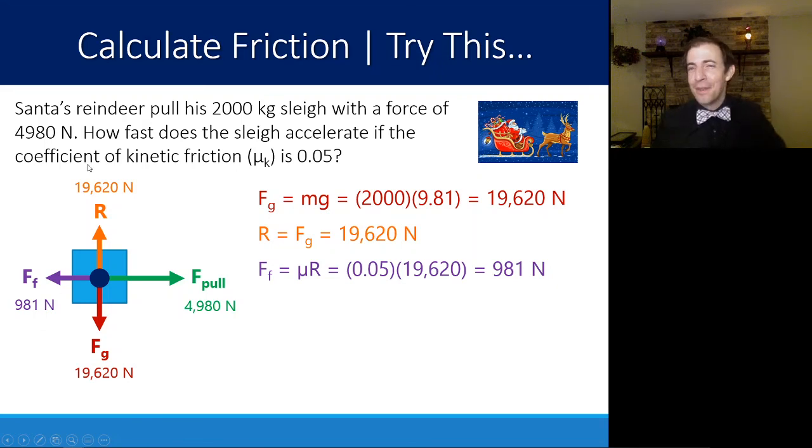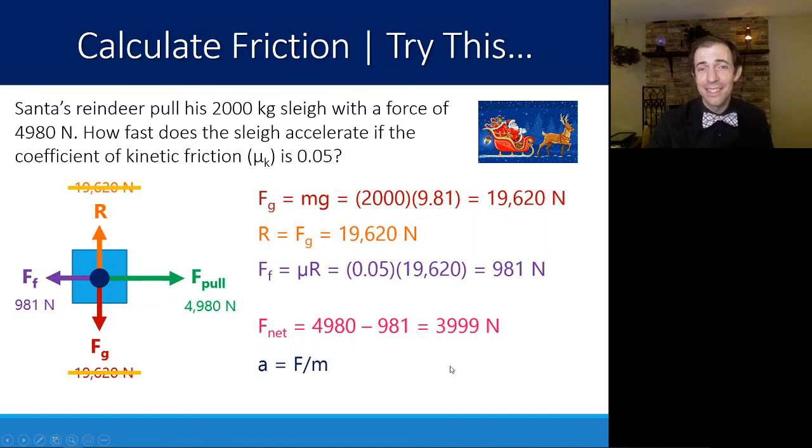If I gave you a free body diagram that looked like this, you should have plenty to tell me what the net force is. These 19,620, they are equal and opposite, they cancel each other out. So all I'm left with to find the net force is just taking the difference between these two, and that gives me 3,999 newtons. If I know the net force and I know the mass, I can find the acceleration because F = ma.